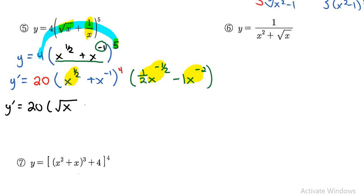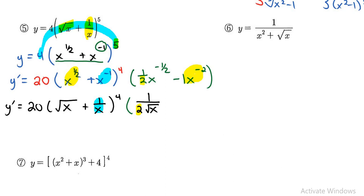Cleaning up the powers by changing them back into radical form: the inside becomes root x plus 1 over x, all to the power of 4. Then the derivative bracket becomes 1 over 2 root x minus 1 over x squared. You should be comfortable converting between radical and power notation throughout this course.